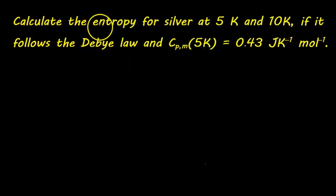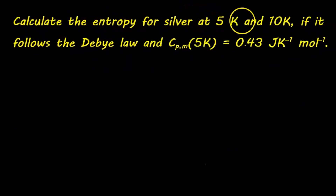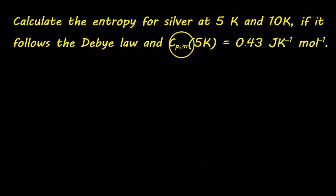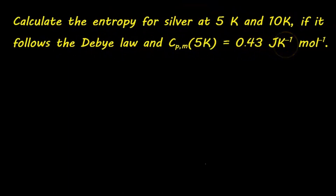Our practice problem: calculate the entropy for silver at 5 Kelvin and 10 Kelvin, if it follows the Debye Law. The heat capacity at 5 Kelvin is 0.43 joules per Kelvin per mole. We can do the 5 Kelvin case quite easily and simply plug that into our equation.